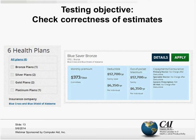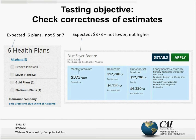We expect $373, not lower, not higher. And there are a lot of other things to check too — deductibles, out-of-pocket maximums, all kinds of things that you need to verify.